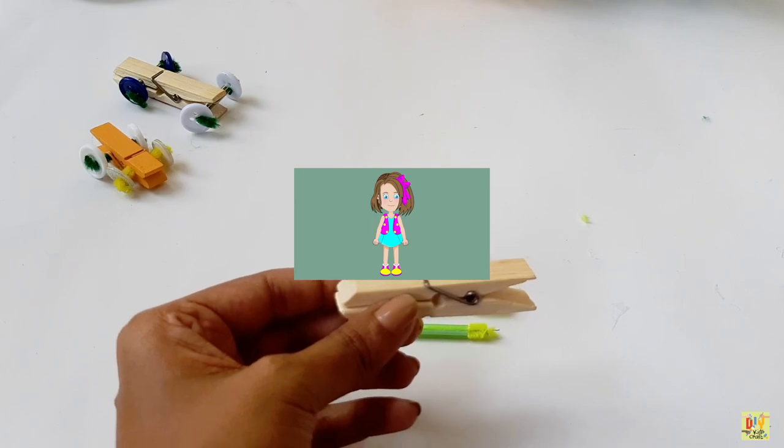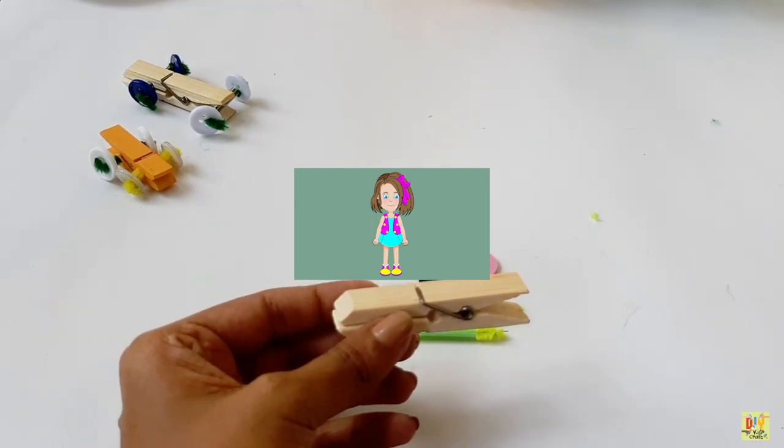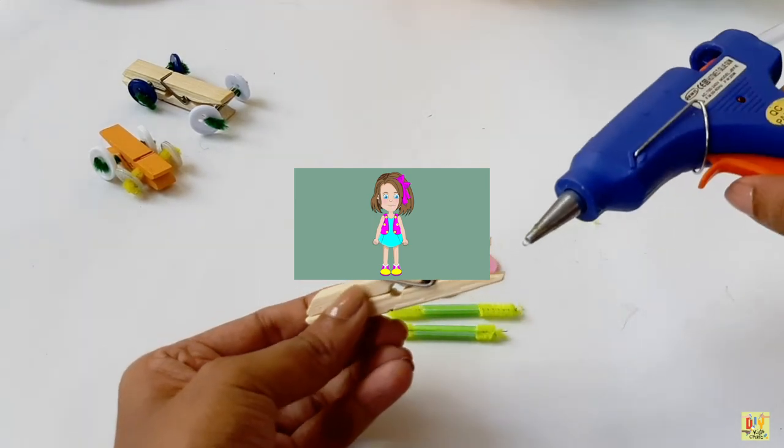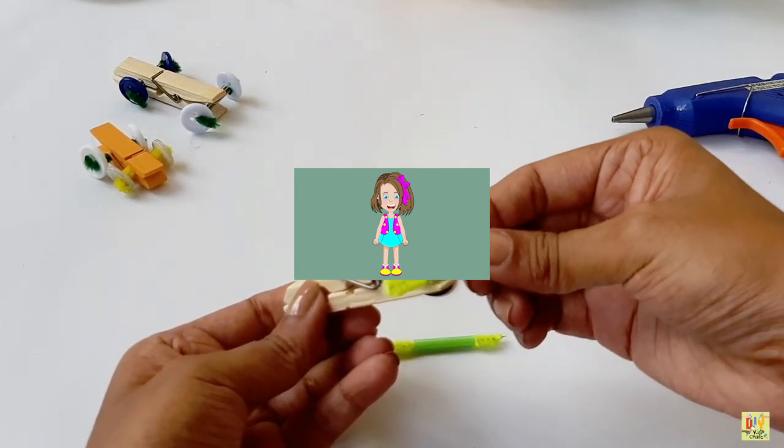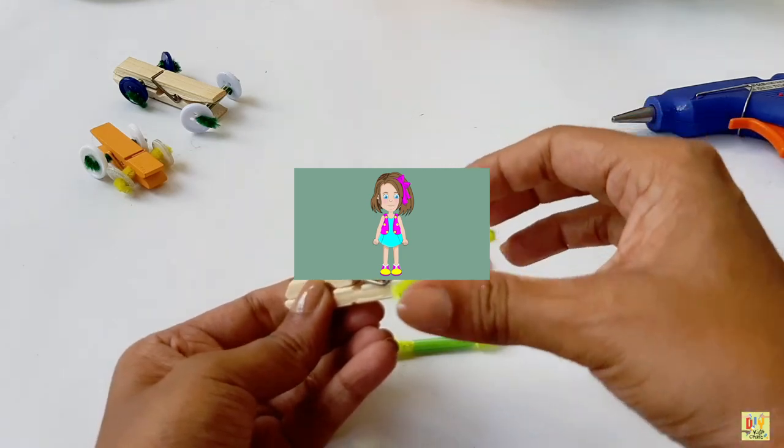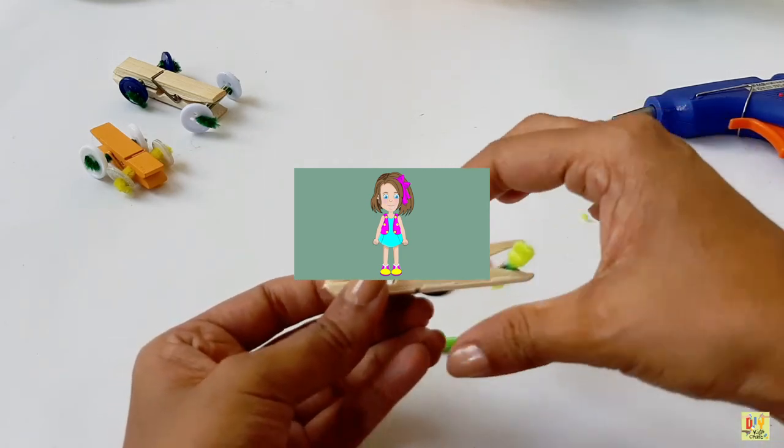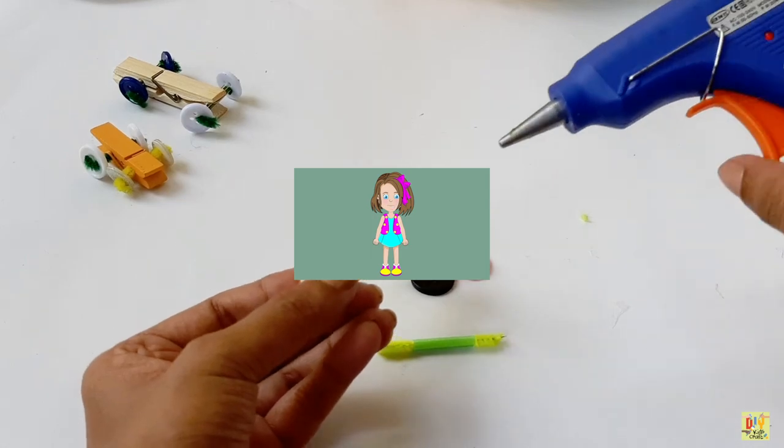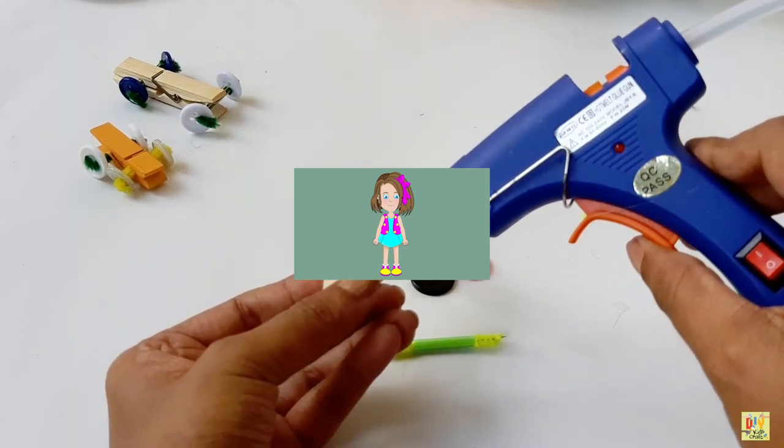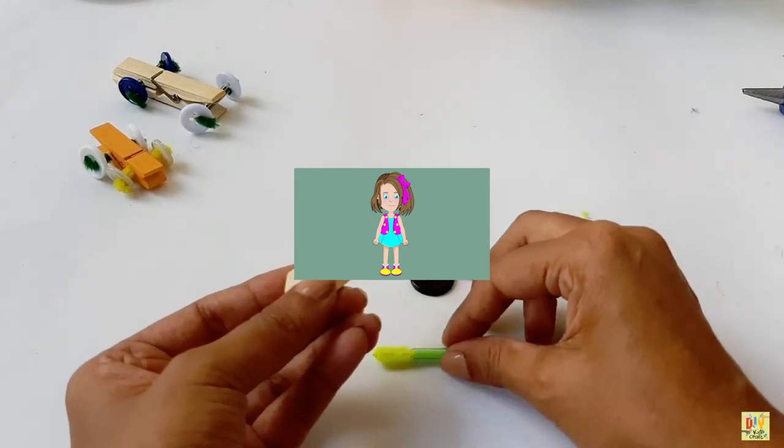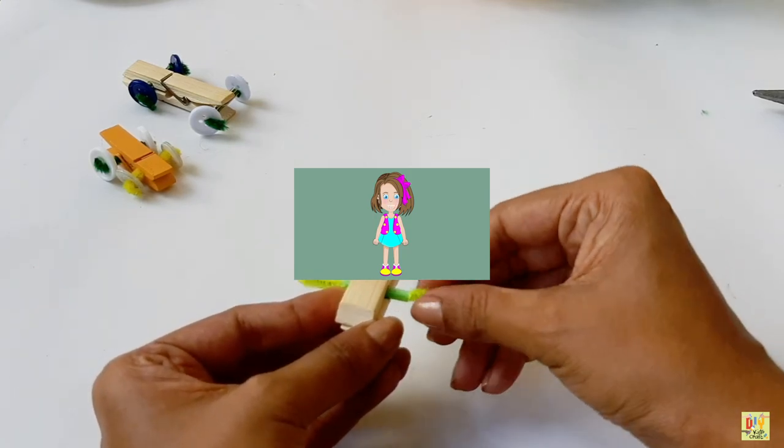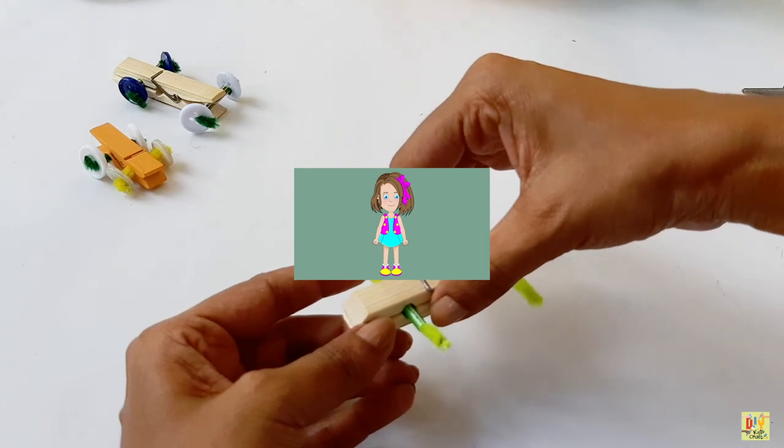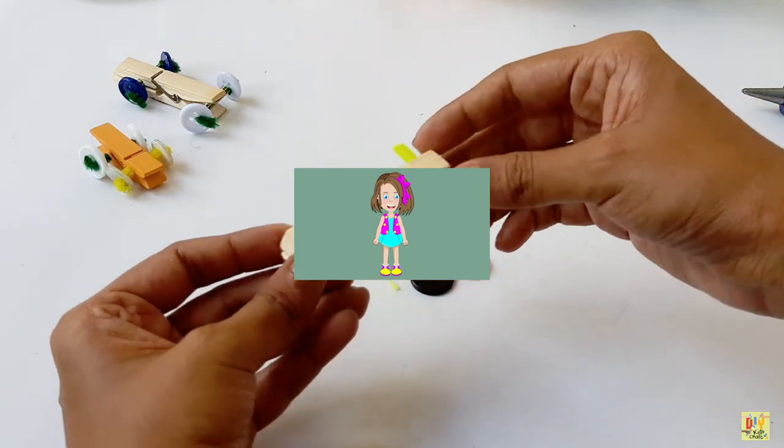Get this clothespin. Using a glue gun, let's take our straw with the brush inside, and then the other one. So this is gonna be our bars for our wheels.